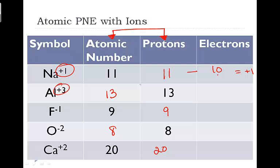Negative one charge, nine minus how much gives us a negative one? Ten. Negative two, eight minus what number gives us a negative two? Ten. Twenty minus what number gives us a positive two? This has to be eighteen.